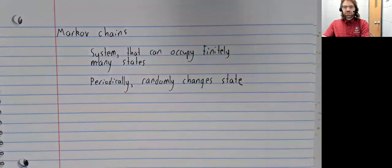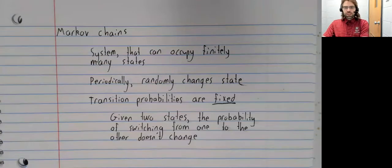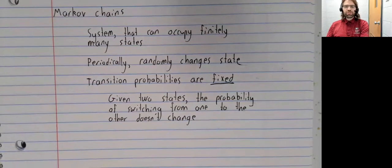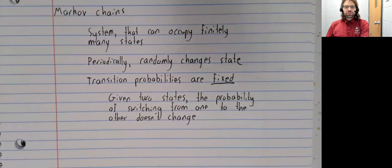So, the system is changing from one state to another at random, with the qualification, and this is an important qualification, that the probabilities of moving between states are fixed. So if you have a state A and a state B, the probability of transitioning from A to B is fixed.